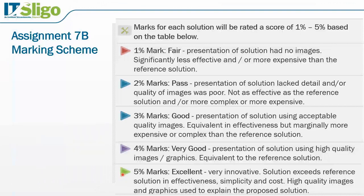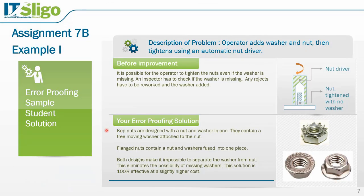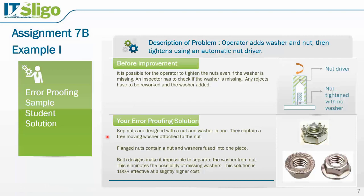Here's another solution a student submitted for that earlier example: switching to kept nuts or flange nuts, which have a built-in washer. The effectiveness of this solution is nearly 100%, because you can't put on the nut without the washer — assuming only these types of nuts are at the station. The cost difference versus separate nuts and washers isn't deemed significant, so this solution definitely merits a four and possibly five out of five, with higher effectiveness being the key factor.